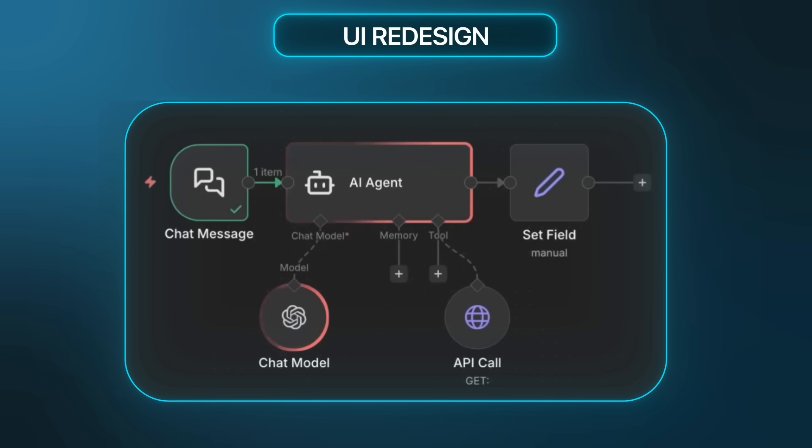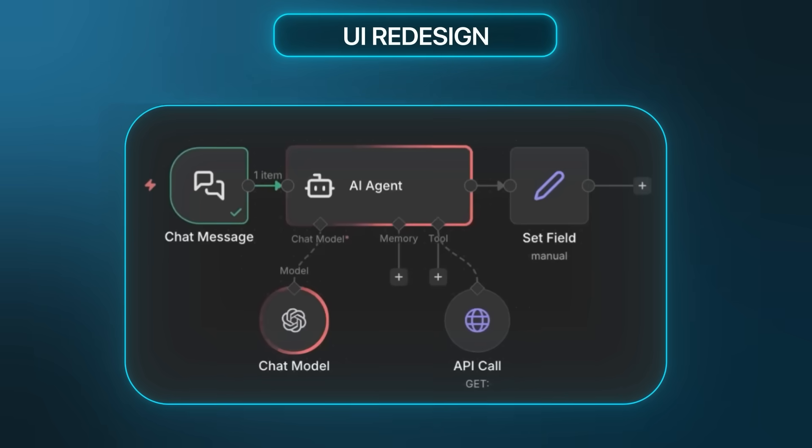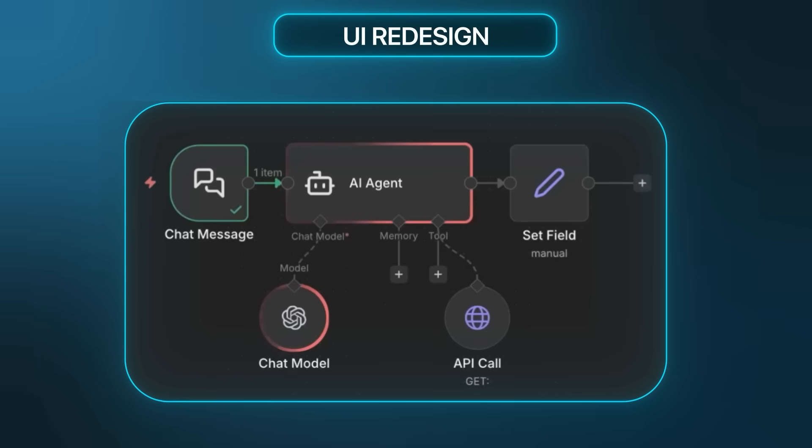The UI redesign is the most obvious change — it's just visual. N8N 2.0 has a flatter, more modern design. The nodes look cleaner. The sidebar is reorganized, and there are new loading animations when nodes execute. It's definitely more polished than version one, but does this matter? For your day-to-day work, yeah, a little bit.